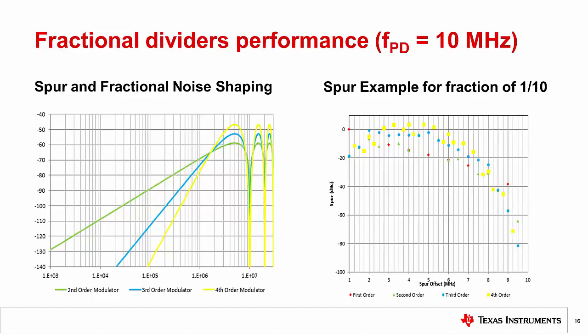Here is an example of a fraction of 1 tenth with a phase detector frequency of 10 MHz. These plots assume an infinite loop bandwidth and no filtering. On the left we see spur and fractional noise shaping transfer function. The close-in fractional noise and spurs are theoretically attenuated and pushed to higher frequencies. The frequency where this peaks is half the phase detector frequency, and this is well beyond where the loop bandwidth would be.